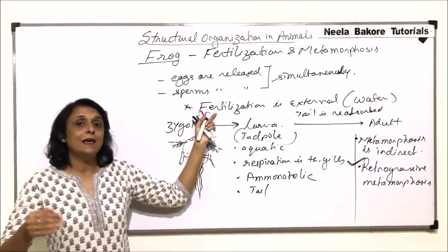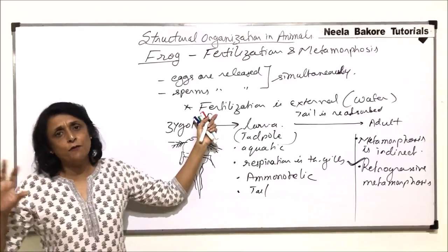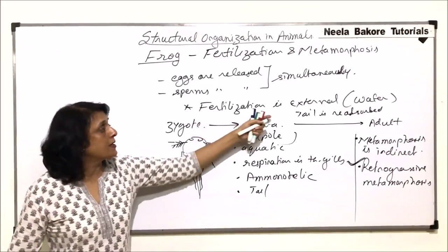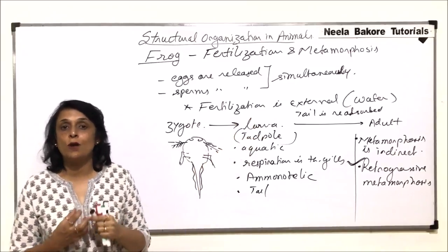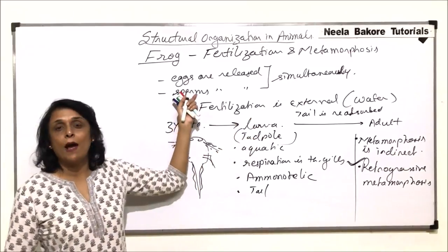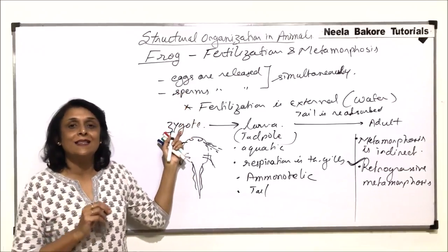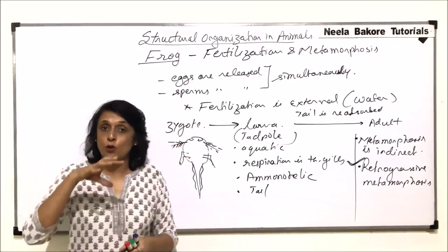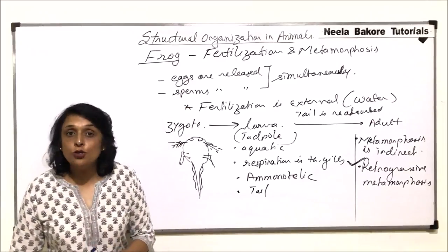If female lays eggs and the male releases sperms at different places, because the external medium is water, it would be very difficult for these two gametes to come closer. And that is why during copulation, as soon as the female releases the eggs, the male releases sperms on top of those eggs, so that fertilization is ensured.